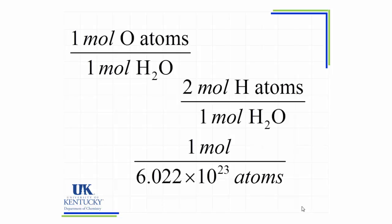Once we've seen what makes up each molecule, we can then write relationships between moles of atoms and moles of the compound. These relationships will be useful in calculations. We've already seen that we can say one mole is equal to 6.022 times 10 to the 23rd atoms. A mole is just a counting number. But now we can also say that we have one mole of oxygen atoms for every one mole of water, or two moles of hydrogen atoms for every mole of water.